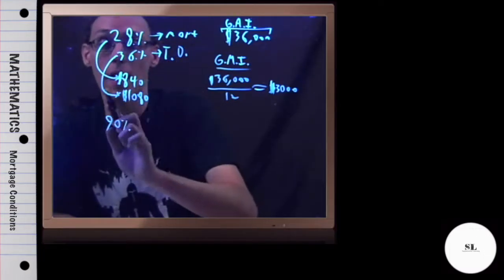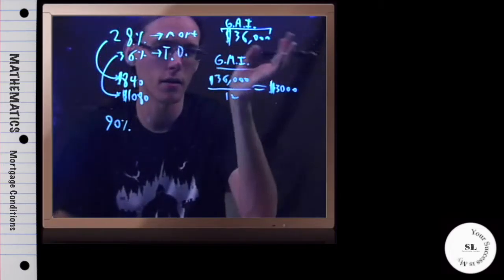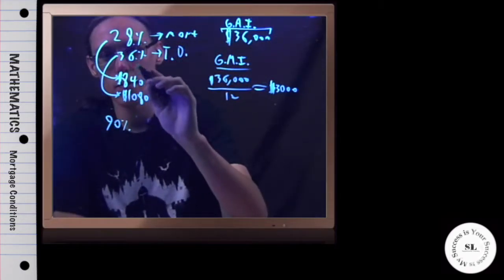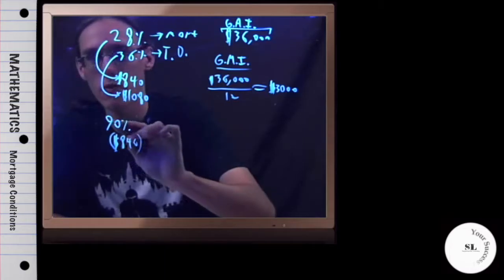Now given all that, what they're asking us is, if your monthly mortgage payment is 90% of the maximum that you can afford, what is the maximum amount you should spend each month for all other debt?